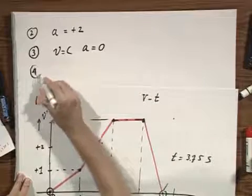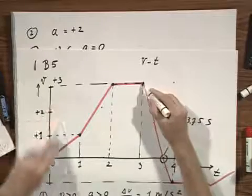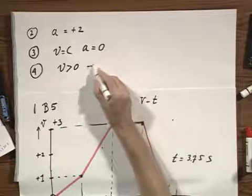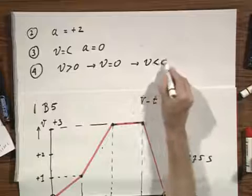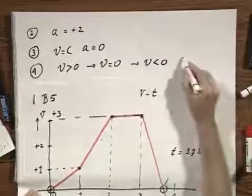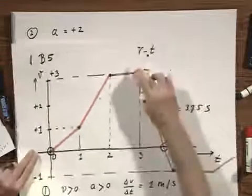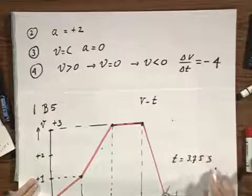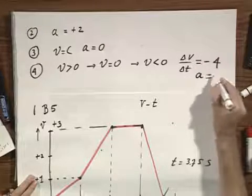During the fourth second, the velocity starts off to be plus 3, becomes 0, and ends up to be minus 1. The velocity becomes negative. If you calculate delta V divided by delta T — which is constant because this is a straight line — you will find that this is minus 4 meters per second squared. So A is negative.